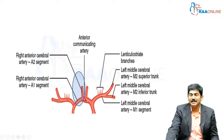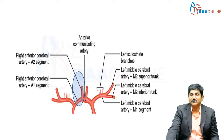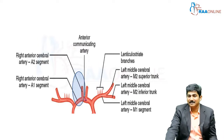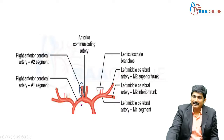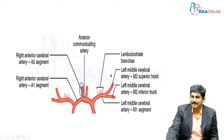From now onwards, the major arterial connections we are going to see will be divided into segment one and segment two by their own divisions. In the anterior cerebral artery, this segment is called A1 and this segment is called A2. A1 and A2 are divided by the anterior communicating artery.